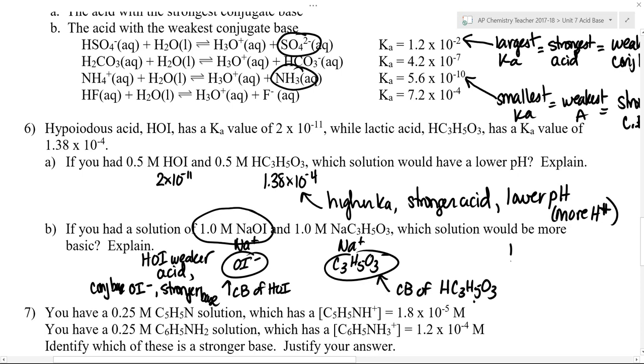You could calculate the Kb for both of those by taking the Kw divided by Ka, and that would give you Kb values for both of them. And if you do that, you should find that the Kb value for OI minus is going to be larger than the Kb value for lactic acid conjugate. That makes sense because over here you'd be dividing by a smaller number, so that'll give you a larger value. Over here you're dividing by a bigger number. So there's a couple of ways to use that relationship.